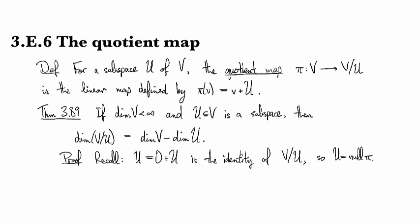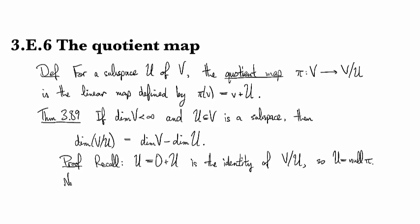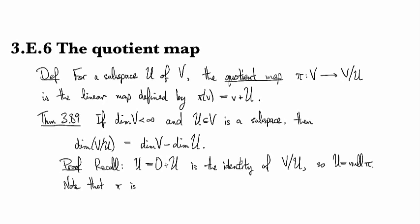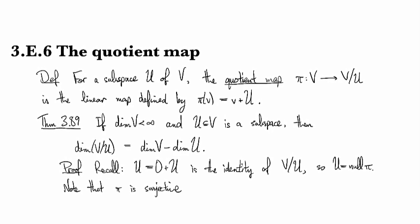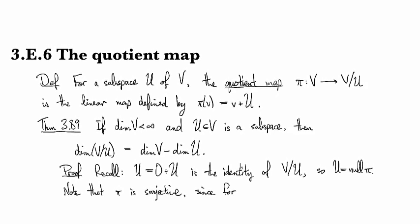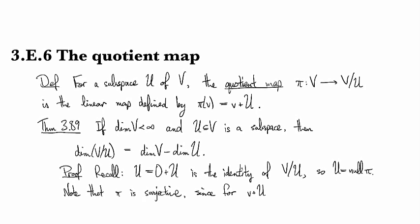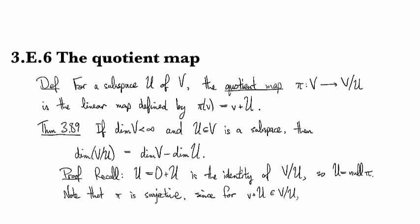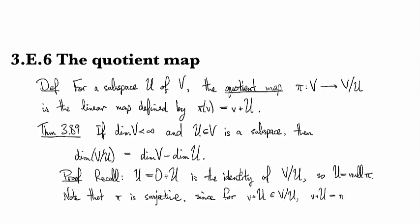Okay, so that's the null space of π. So note that π is surjective, since for any v plus u in the quotient space, v plus u is the image of v.